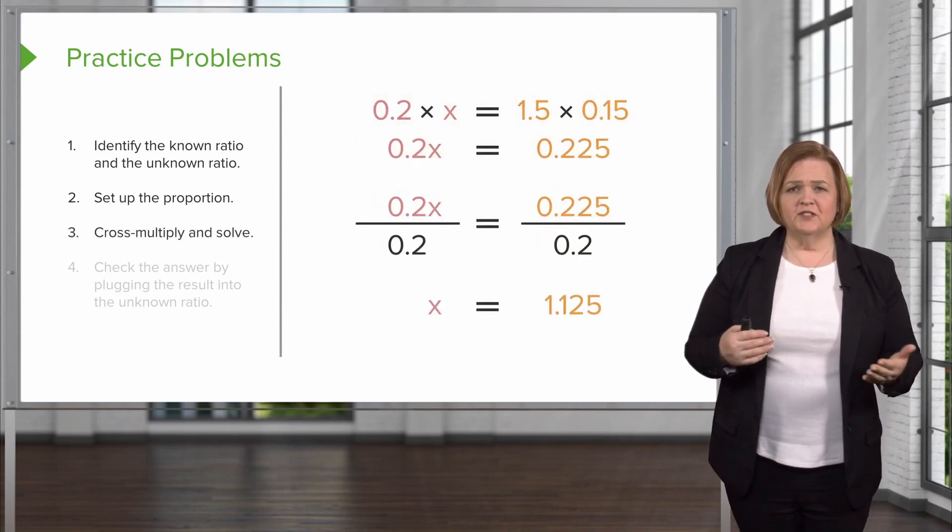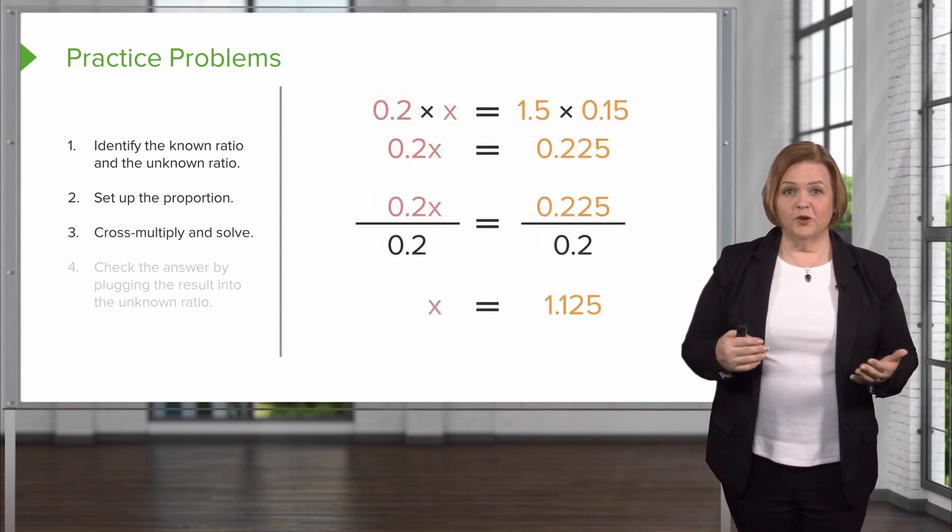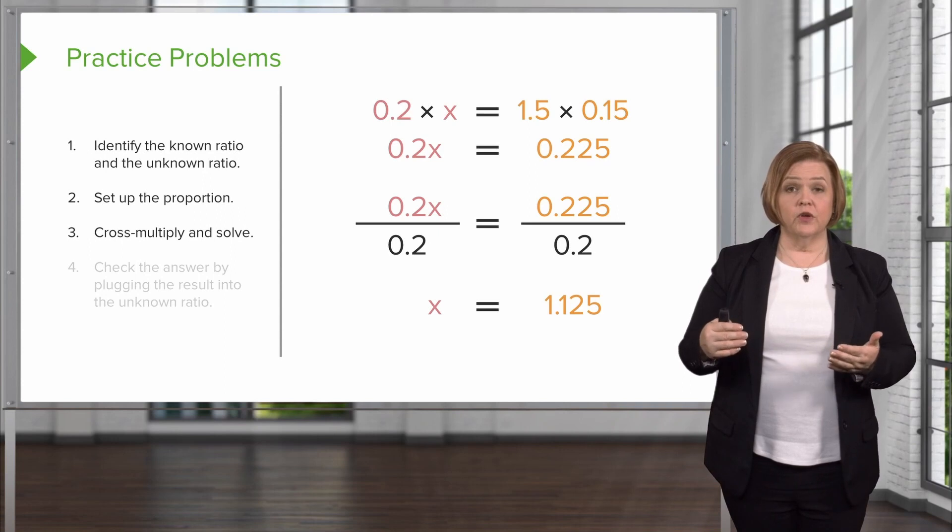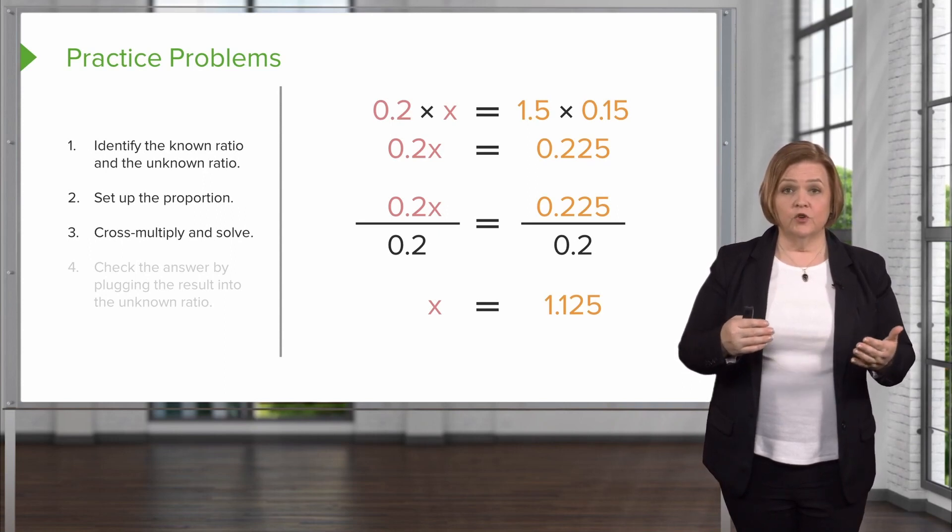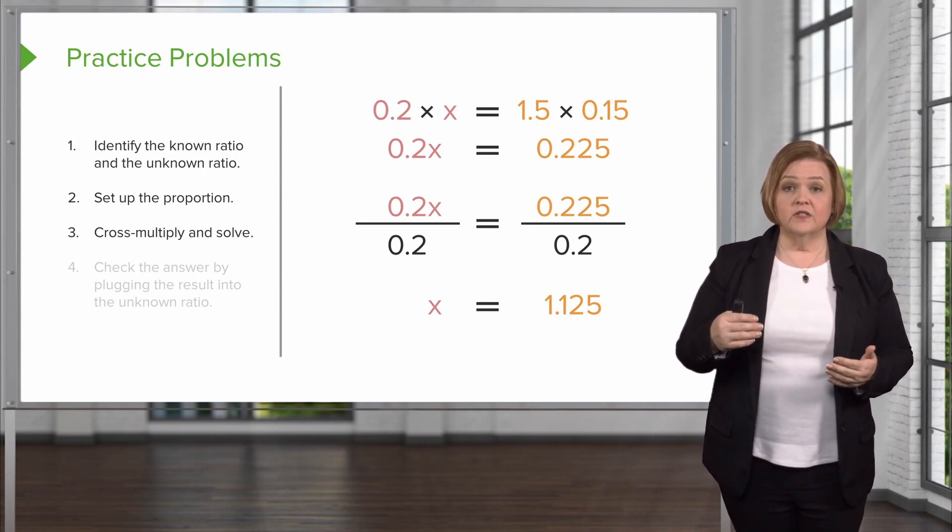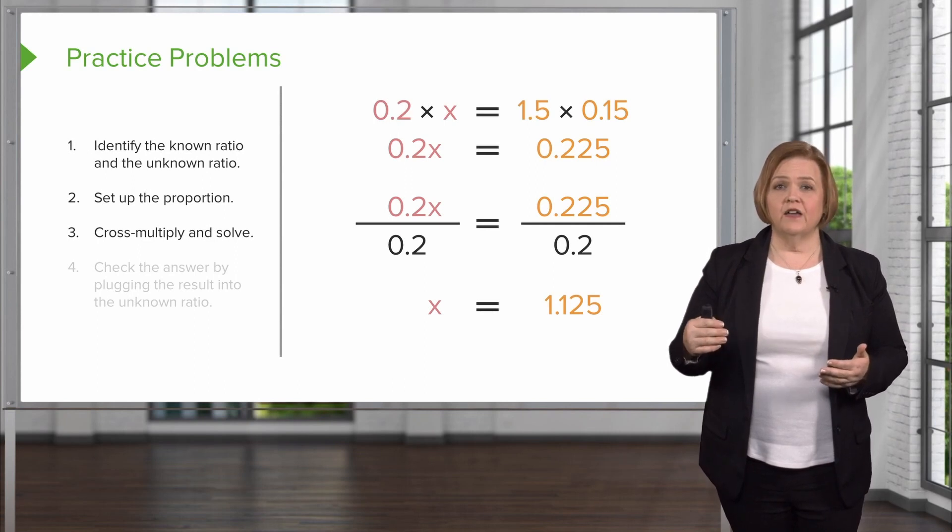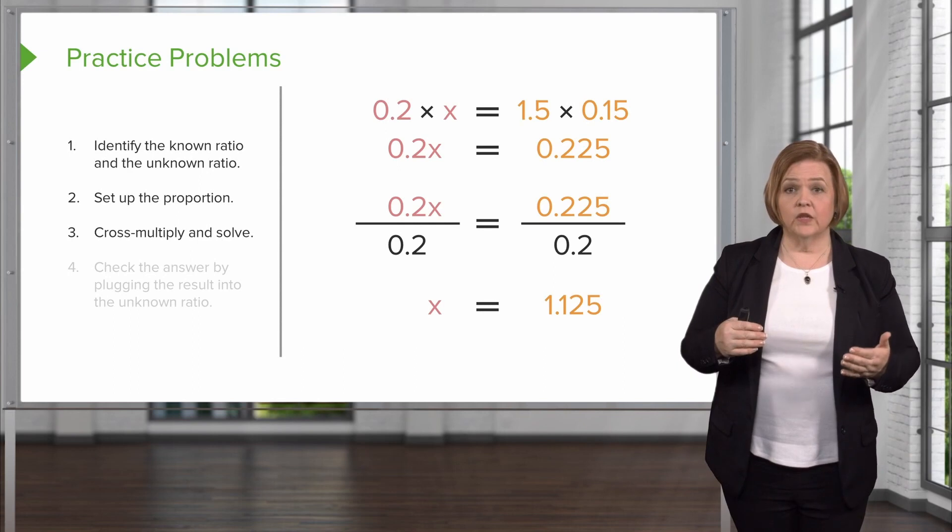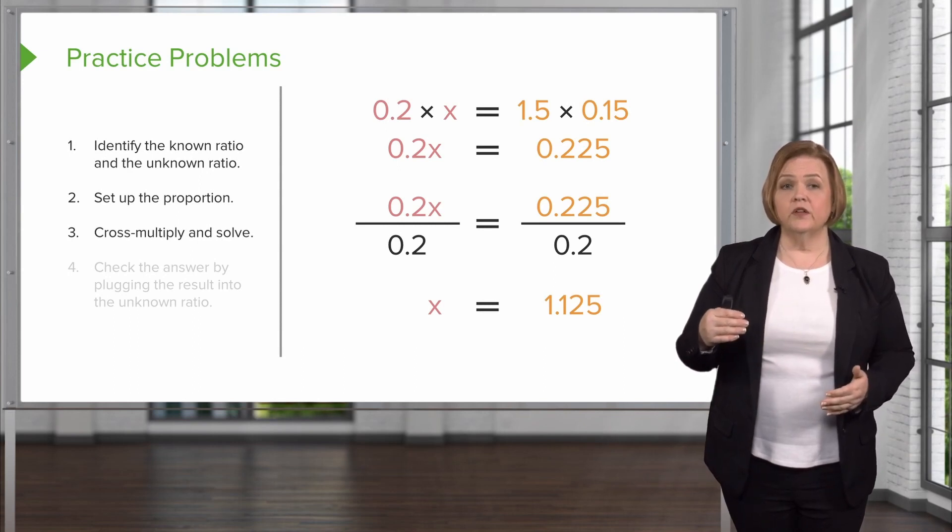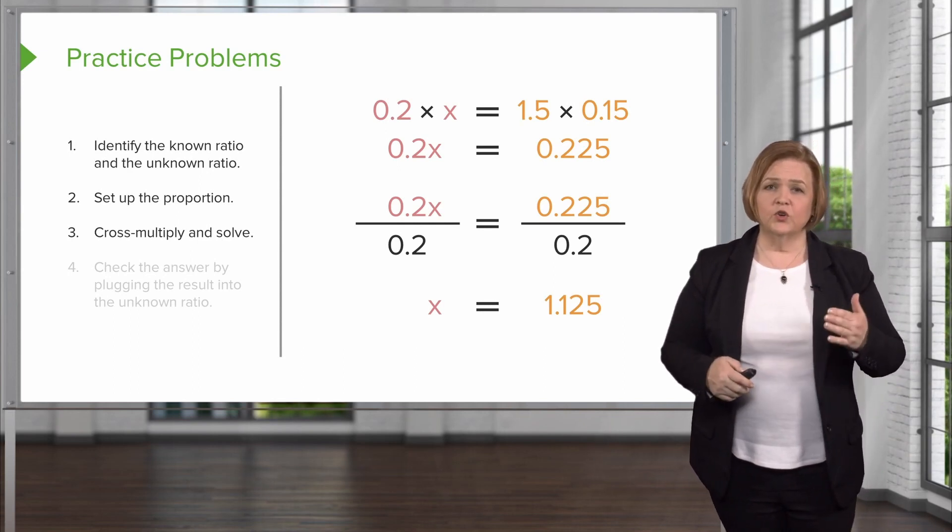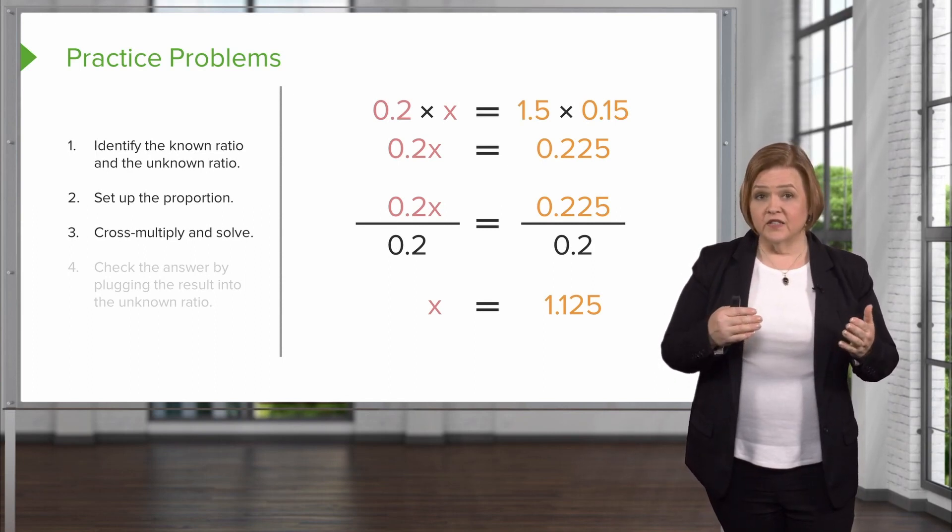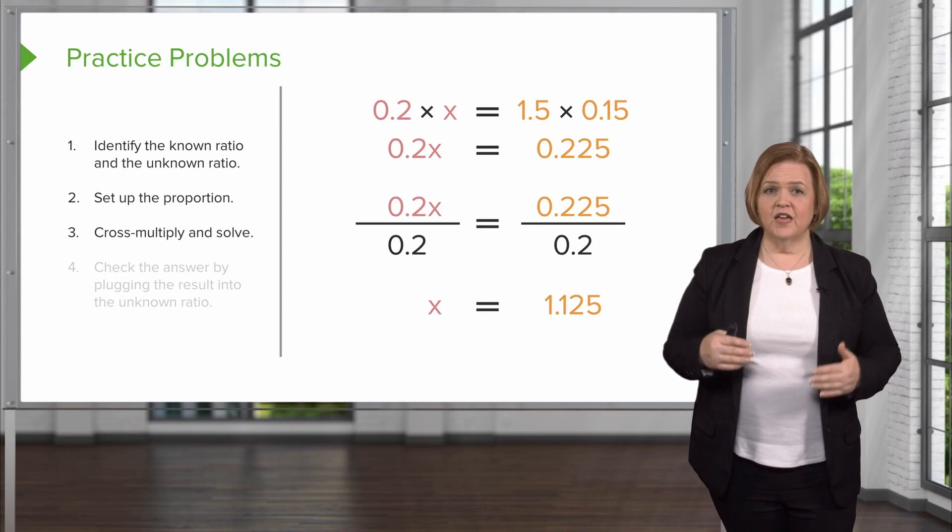Now we cross multiply and solve. We've got the math for you up there on the screen. 0.2 times x equals one and a half times 0.15. We get 0.2x equals 0.225. So when we do the math, we come up with x equaling 1.125. So you cross multiplied. You solved for x by dividing by the number that's in front of the x. And that's what we came up with.